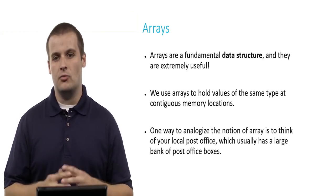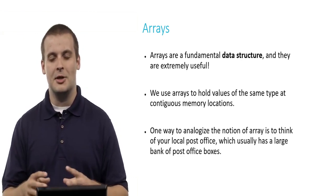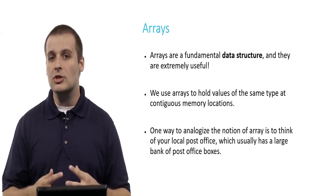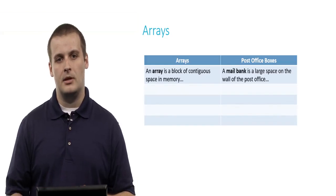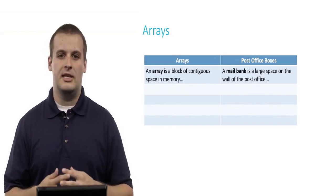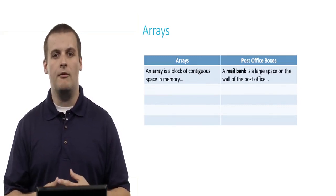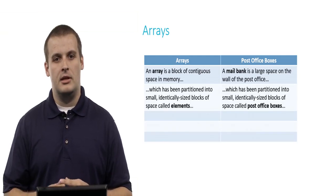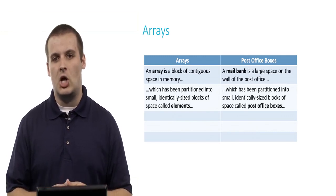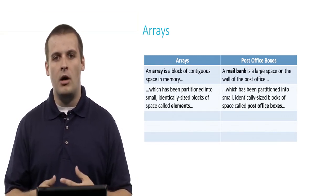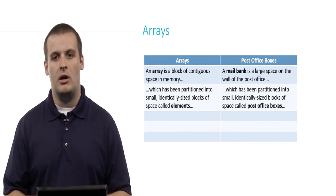One way to analogize arrays is to think about your local post office for a second. Step away from programming and visualize in your mind your local post office. Usually, in most post offices, there's a large bank of post office boxes on the wall. An array is a giant block of contiguous memory, the same way that a mail bank in your post office is a large space on the wall. Arrays have been partitioned into small, identically sized blocks of space, each of which is called an element, in the same way that the wall at the post office has been partitioned into small, identically sized blocks of space, which we call a PO box.